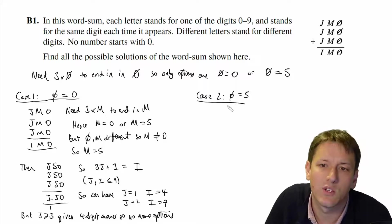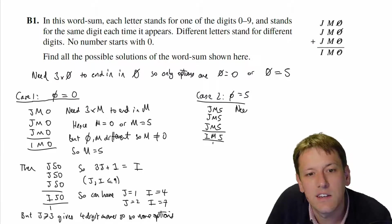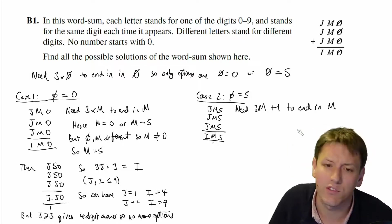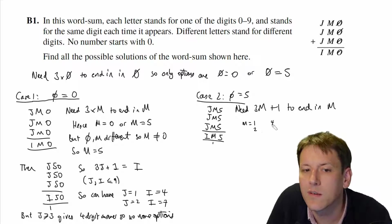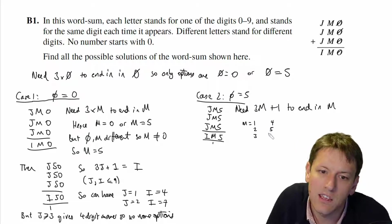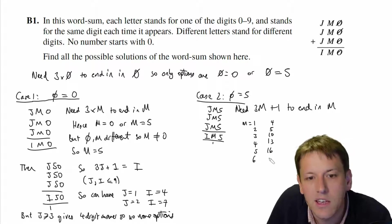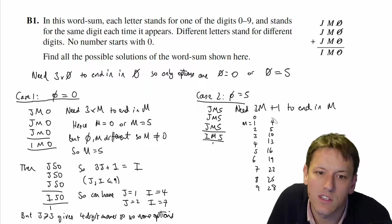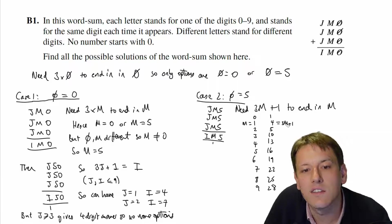In Case 2, where O equals five, the word sum becomes JM5 + JM5 + JM5. We get 15 in the units, so we carry 1 and now need three times M plus 1 to end in M. Going through all options: M=1 gives 4, M=2 gives 5, M=3 gives 10, M=4 gives 13, M=5 gives 16, M=6 gives 19, M=7 gives 22, M=8 gives 25, M=9 gives 28. In no case does 3M + 1 end in M.